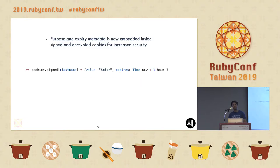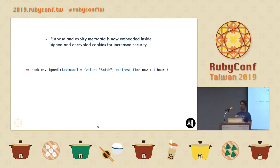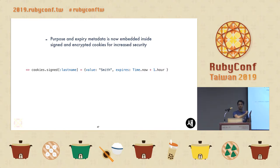Some changes in Action Pack. If you've used signed or encrypted cookies, there was an attack wherein a user could copy an encrypted cookie and use it as a different cookie. Now by default in signed and encrypted cookies, purpose and expiry metadata is embedded so that whenever the cookie comes in, it adds an extra layer — the cookie information is always validated against what the cookie was actually meant to be used for. For example, if you have a session cookie, it will generate information about what the cookie is meant for and always match against that metadata.